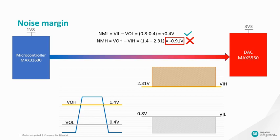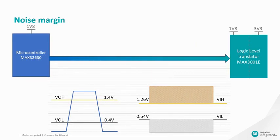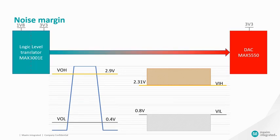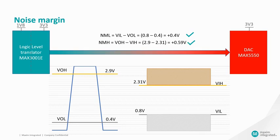The level translator should be selected in such a way that it matches the noise margin levels to the components it is connected to at its input and output ports. For this case, I have chosen Maxim's MAX3001E level translator for interfacing the MAX32630 microcontroller with the MAX250 DAC. As shown, the microcontroller is interfaced to the input port of the level translator. By calculating the noise margins, you can see both NML and NMH levels are positive. Hence, the microcontroller's output port and the level translator's input port can be interfaced without any issue. Similarly, the DAC is interfaced to the output port of the level translator. Both noise margin NML and NMH levels are positive, so the level translator and DAC can be interfaced without any issue.